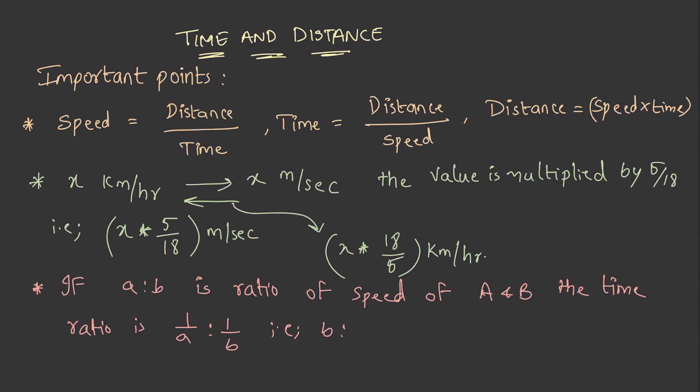For example, a man covered half a distance with x kilometers per hour and the other half with y kilometers per hour. The average speed calculated by 2xy by x plus y kilometers per hour. These points are to be memorized.